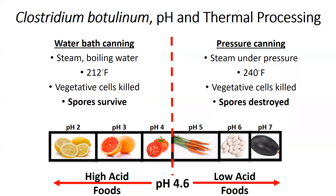In contrast, if we have a low acid canned food, we have to use pressure canning to get to the extremely high temperatures required to destroy the spores of Clostridium botulinum. This high temperature will also kill vegetative cells of other pathogenic and spoilage microorganisms.